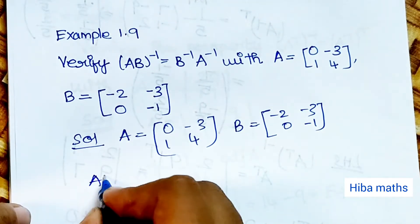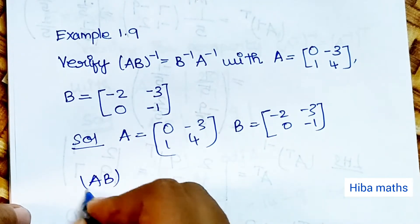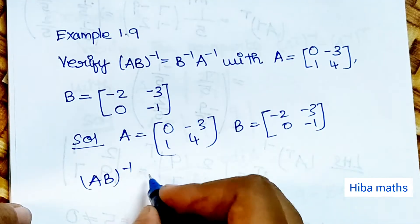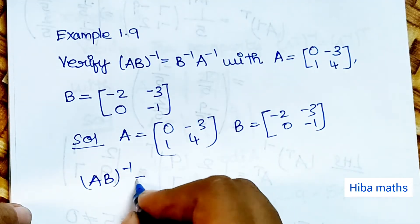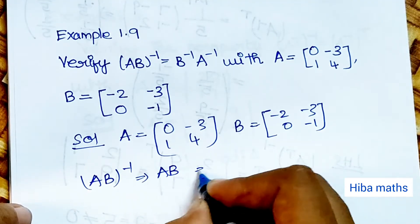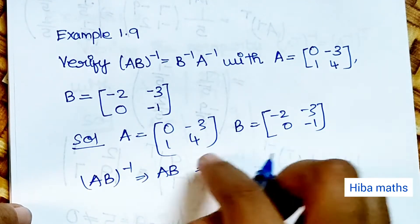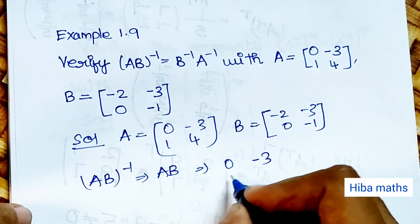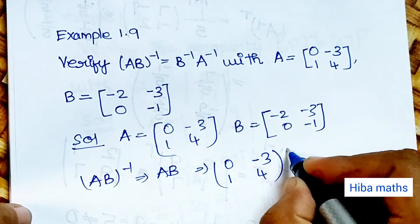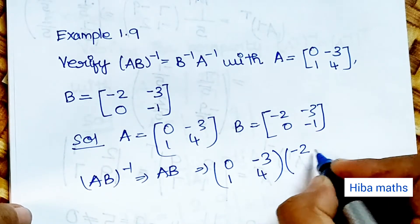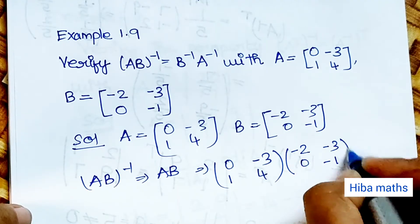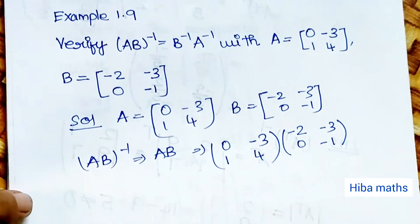First, for the LHS side, AB inverse equals AB whole inverse. So AB equals A times B, which is [0, −3; 1, 4] multiplied by [−2, −3; 0, −1]. We will solve the problem step by step.